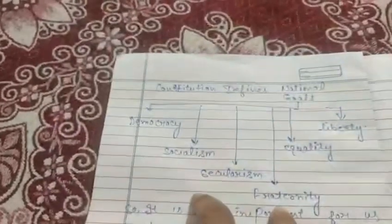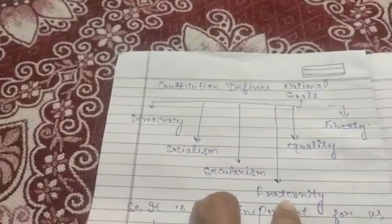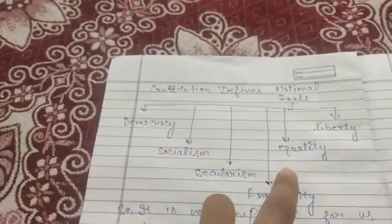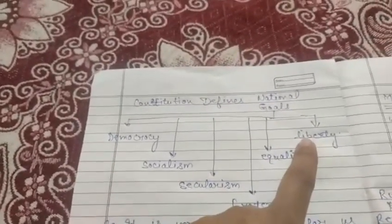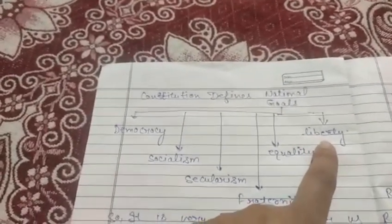Then next one is fraternity, it means brotherhood. It means we all are brothers and sisters, we all are Indians. The next one is equality, it means we are all equal. And liberty, it means freedom. We have freedom to move and travel in any part of the country.